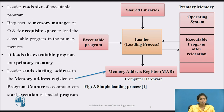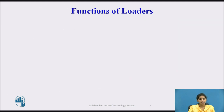When the whole executable program is loaded into the primary memory from the secondary storage, that is disk, then the loader sends the starting address to the memory address register or to the program counter of the target computer hardware, so that the computer can start the execution of the loaded program. Next, we see the functions of the loader.